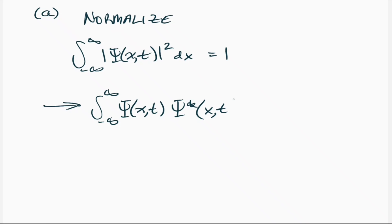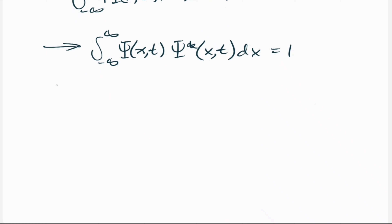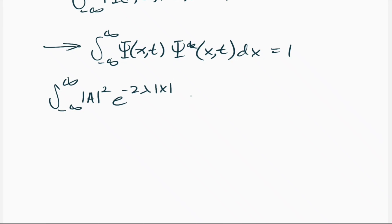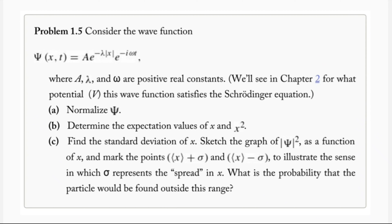We have the integral from negative infinity to positive infinity of psi(x,t) times psi-star(x,t) dx equals 1. Plugging in, we get A² times e to the negative 2λ|x|, and then we have e to the negative iωt times e to the positive iωt from the complex conjugate.